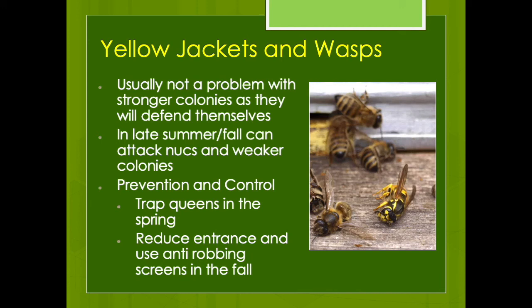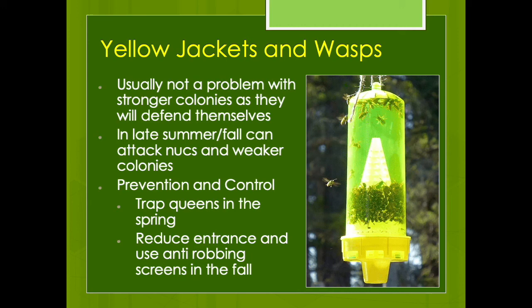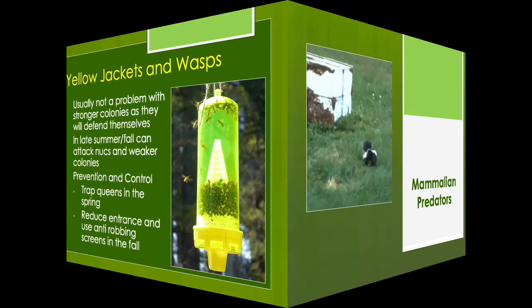Yellow jackets and wasps are usually not a problem for stronger colonies, but weaker colonies and nukes can sometimes be attacked. I like to trap the queens in the spring — every queen you catch is one colony that did not have a chance to develop. You can also reduce the entrance and use anti-robbing screens in the fall. In parts of the country like the Pacific Northwest these can really be a problem, but in the Rockies and Great Plains it does not seem to be as much of an issue.